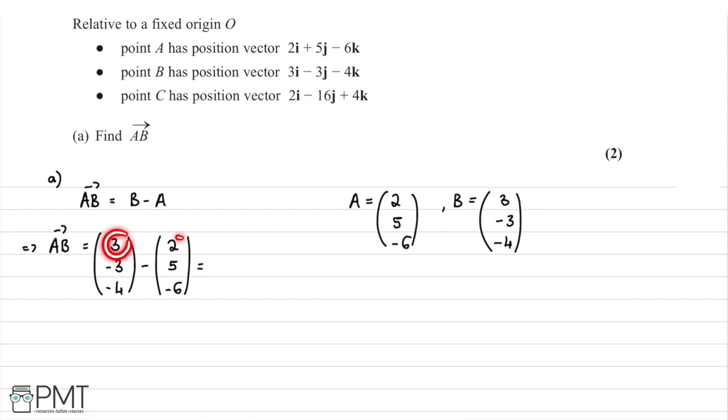We're going to have 3 minus 2, which is equal to 1. We're going to have minus 3 minus 5, which is equal to minus 8. Then we're going to have negative 4 take away negative 6. So that's the same as negative 4 add 6, which equals 2.